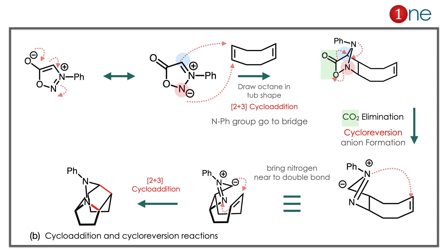After CO2 elimination, you have negative and positive charges remaining with an alkene in the system. The nitrogen comes close to the alkene — the ion attacks the alkene — giving another cyclization: a second [2+3] cycloaddition with nitrogen and alkene. The answer is definitely B because cycloaddition and then cycloreversion occur. Key learnings: whenever you have a heterocyclic ring with N–N–O, think [2+3] cycloaddition; and if there is a good leaving group in the ring, consider cycloreversion.